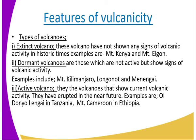Active volcanoes are volcanoes that show current volcanic activity — they have erupted in the recent past. For example, we have Ol Doinyo Lengai in Tanzania, and Mount Cameroon in Ethiopia. These mountains have a history of eruption, which is why they are referred to as active volcanoes.